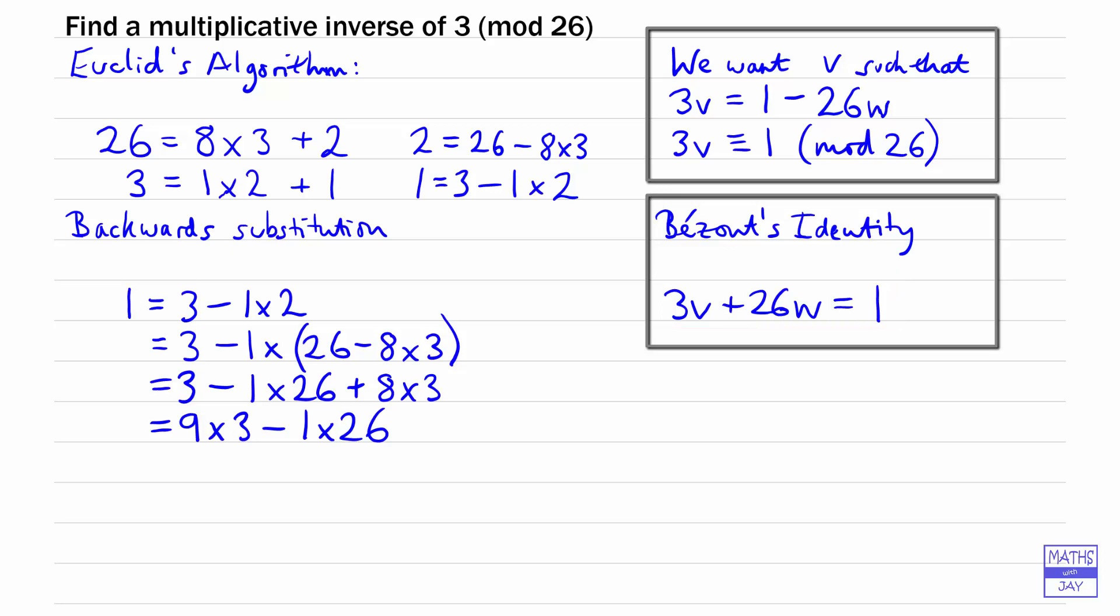Remember what we've been trying to do: we're trying to write 3 multiplied by an integer equal to 1 plus or minus something times another integer. So we have found 9 times 3, so 9 is the number we've been looking for, and that's equal to 1 plus 1 times 26. This is congruent to 1 mod 26.